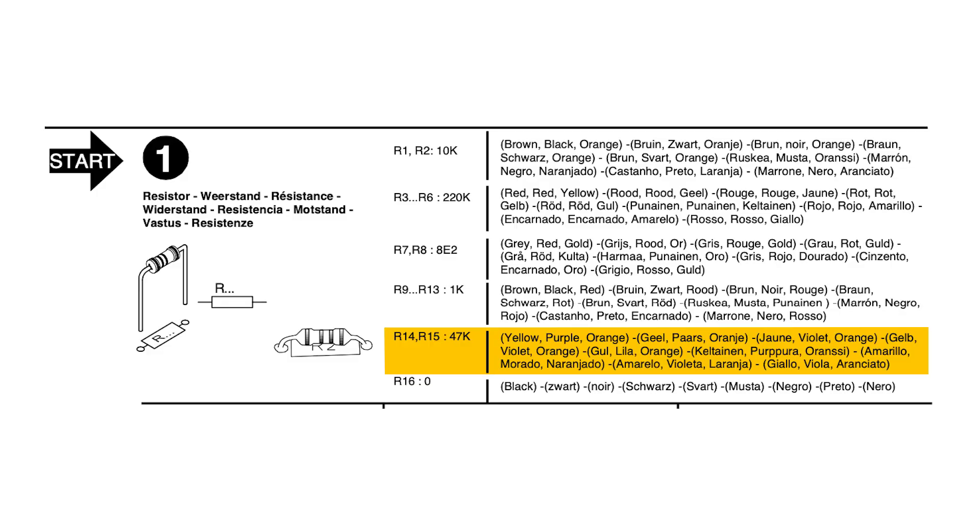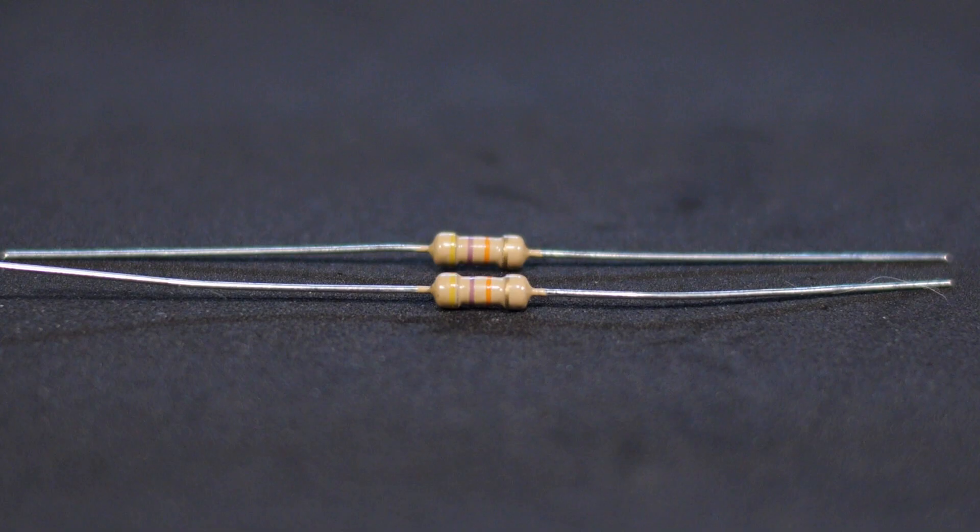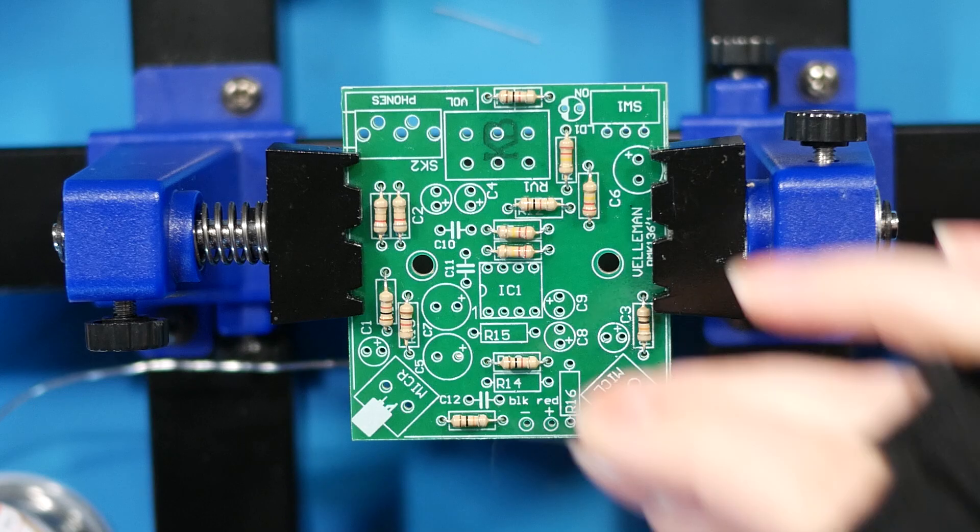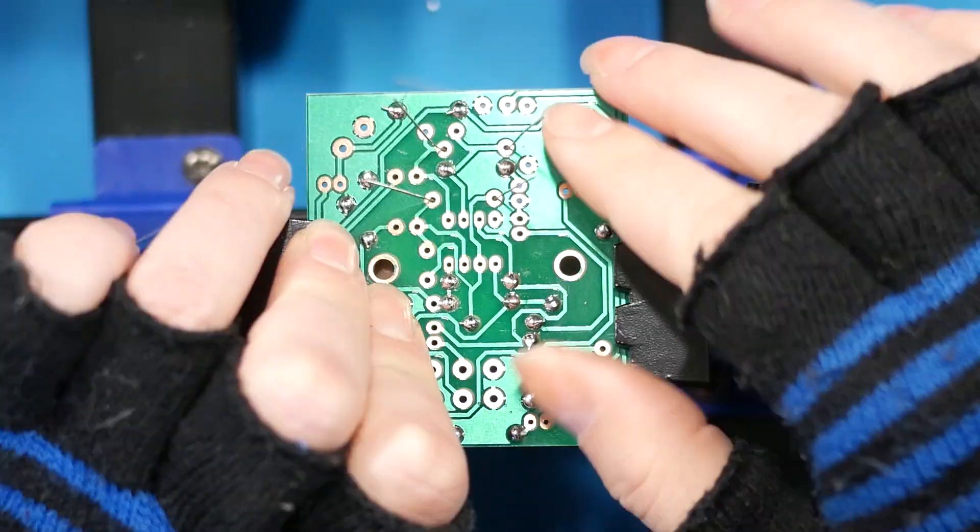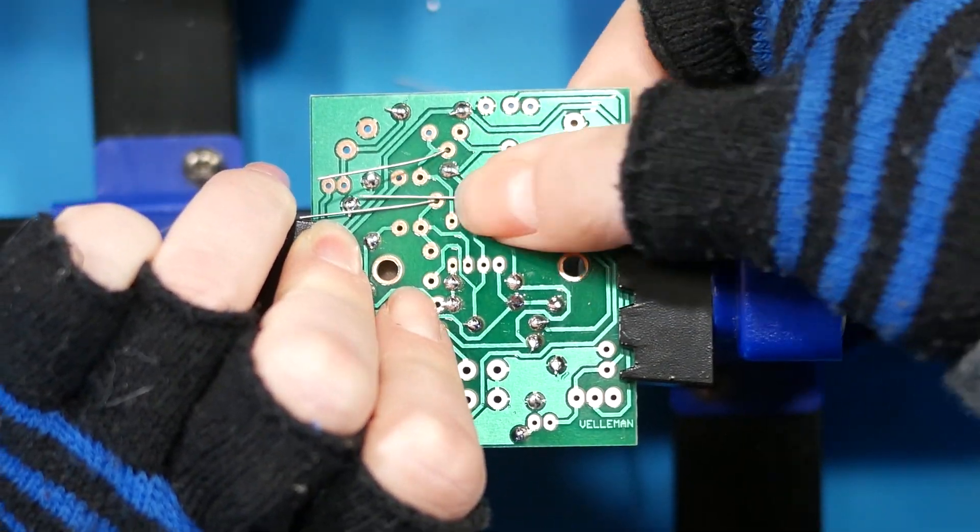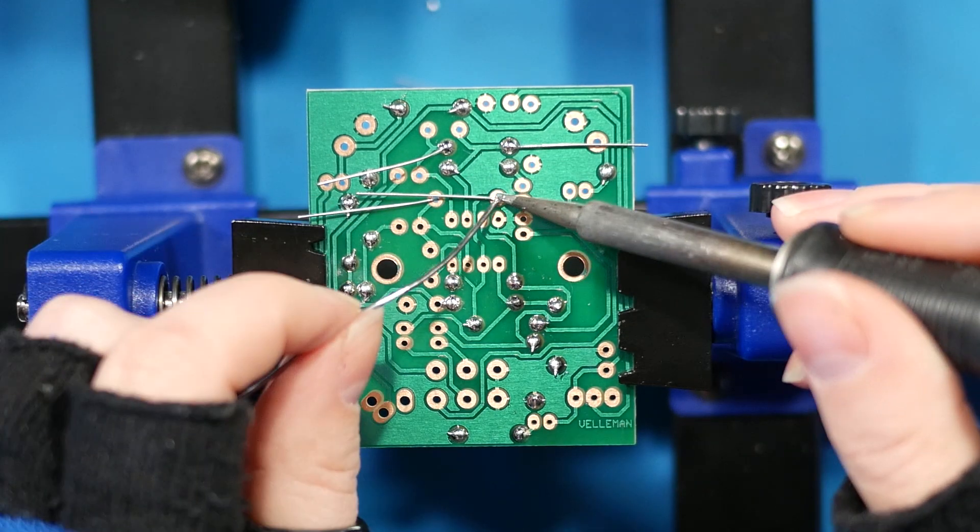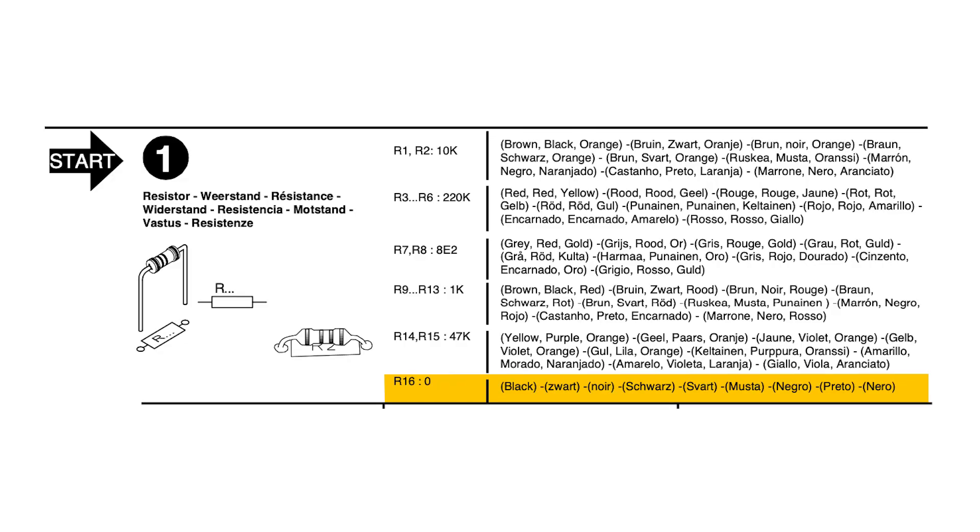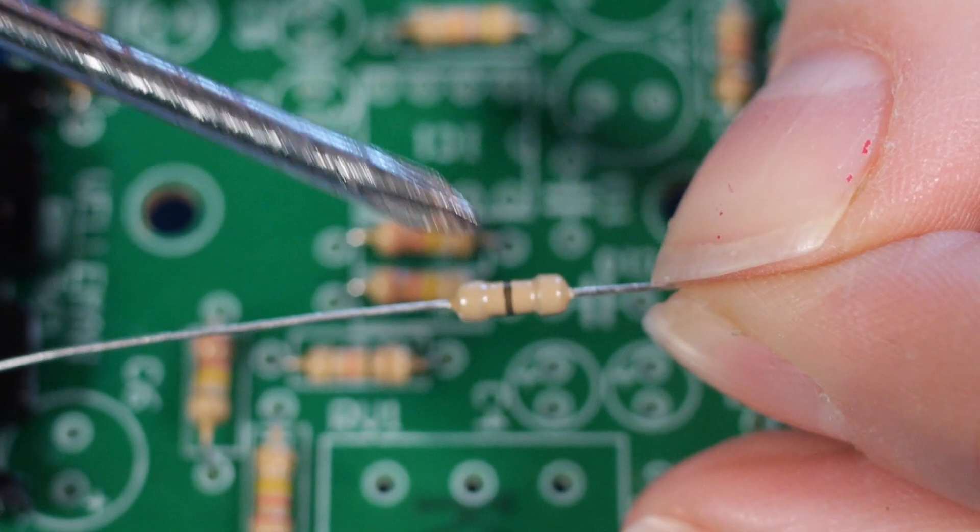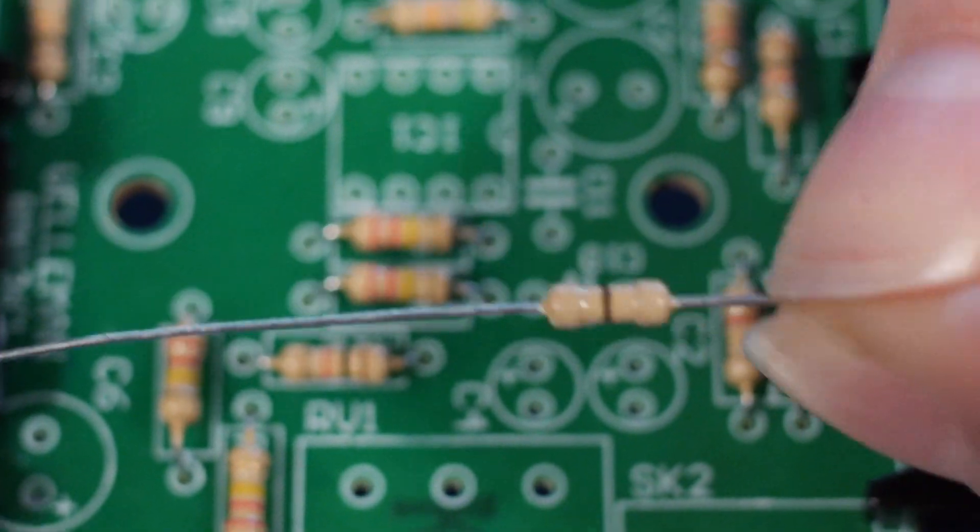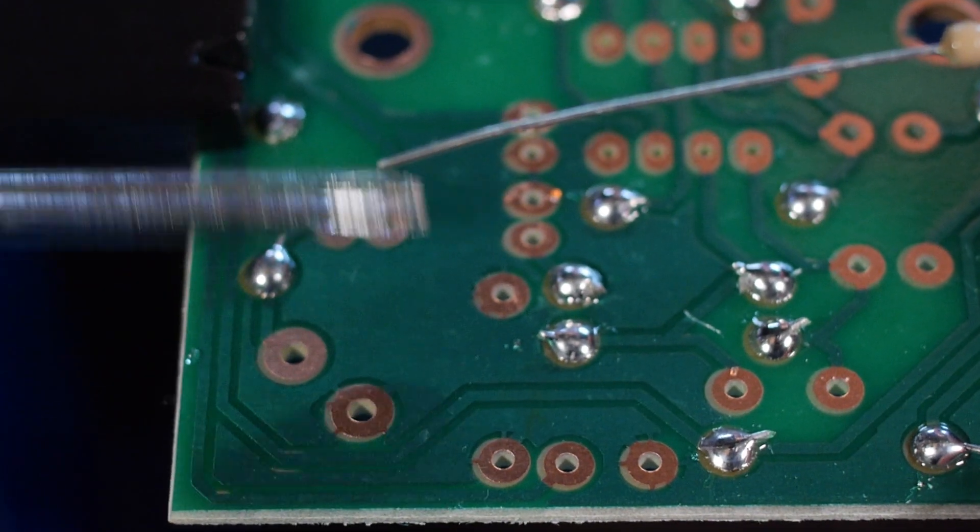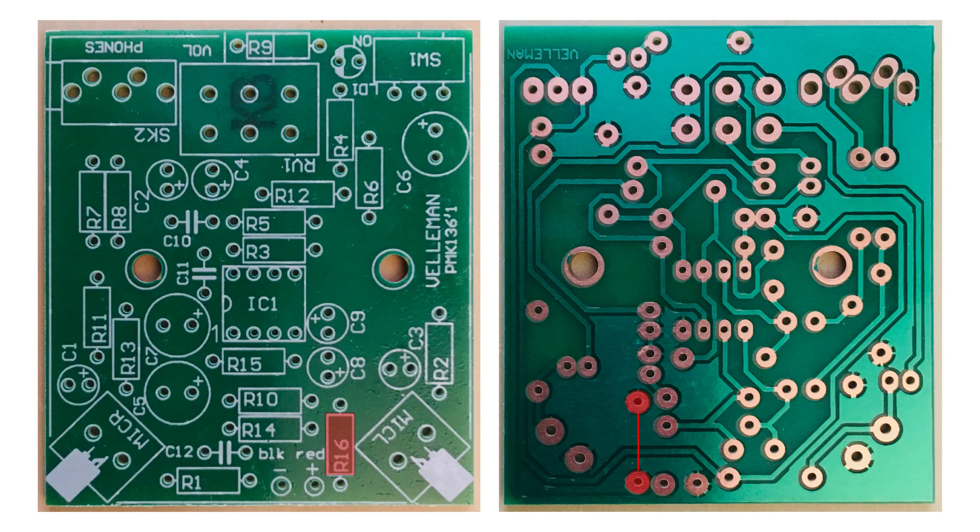Then two loose 47k ohm resistors: yellow, purple, orange. Place them in R14 and R15. The last resistor is a zero ohm resistor. Sometimes in PCB design there's a place where you can't easily make a jumper or connect your traces, so they'll add a resistor place and then just put a zero ohm resistor that acts as a jumper to make that connection.